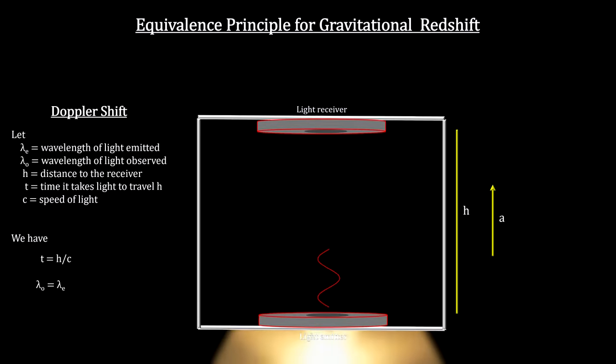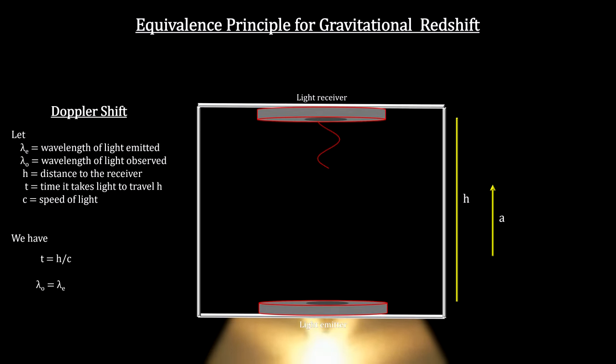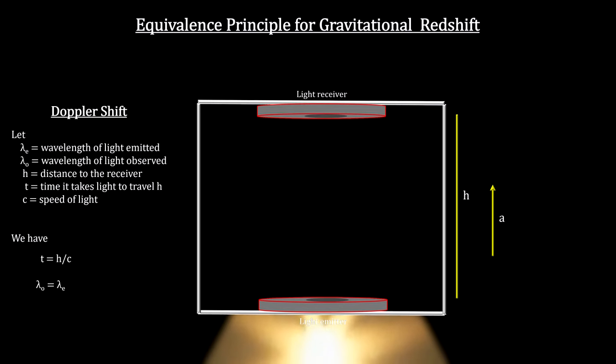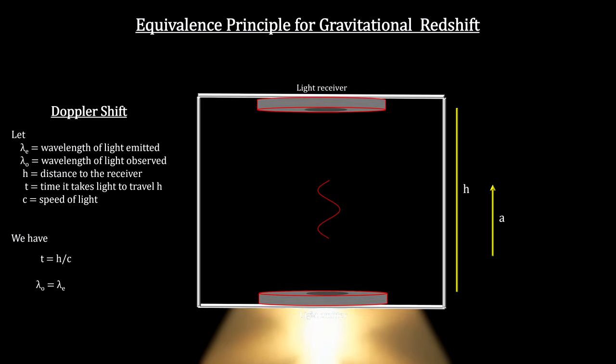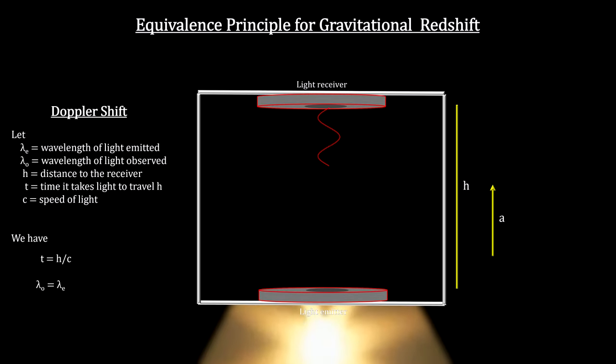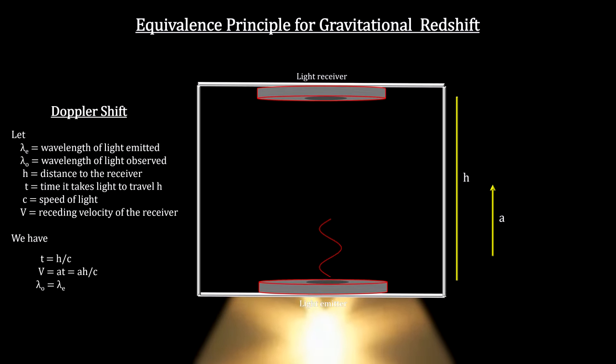Now put the elevator into a constant acceleration. Note that the receiver, at the time the light is observed, is further away from the point where the light was transmitted than it was in the static case. In other words, the receiver has acquired a velocity with respect to the light.